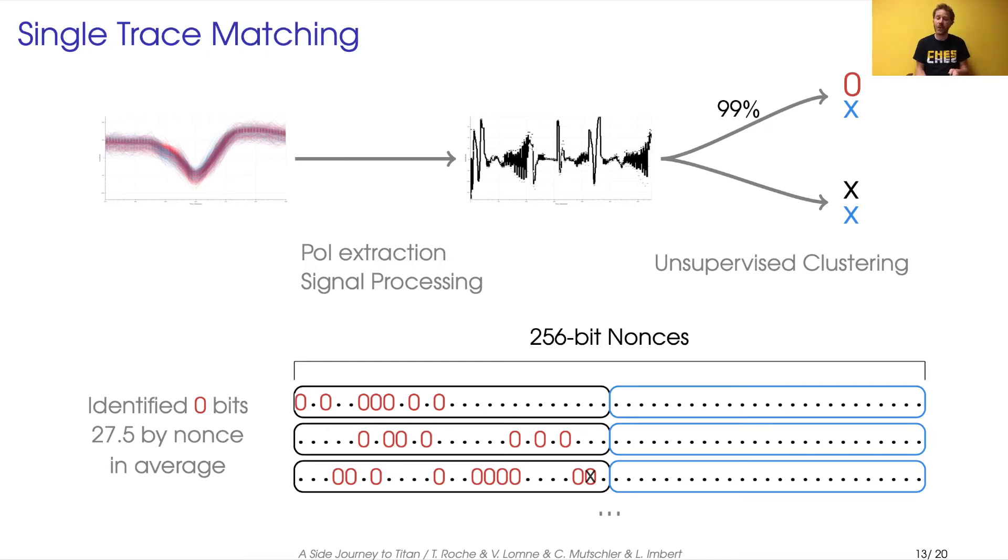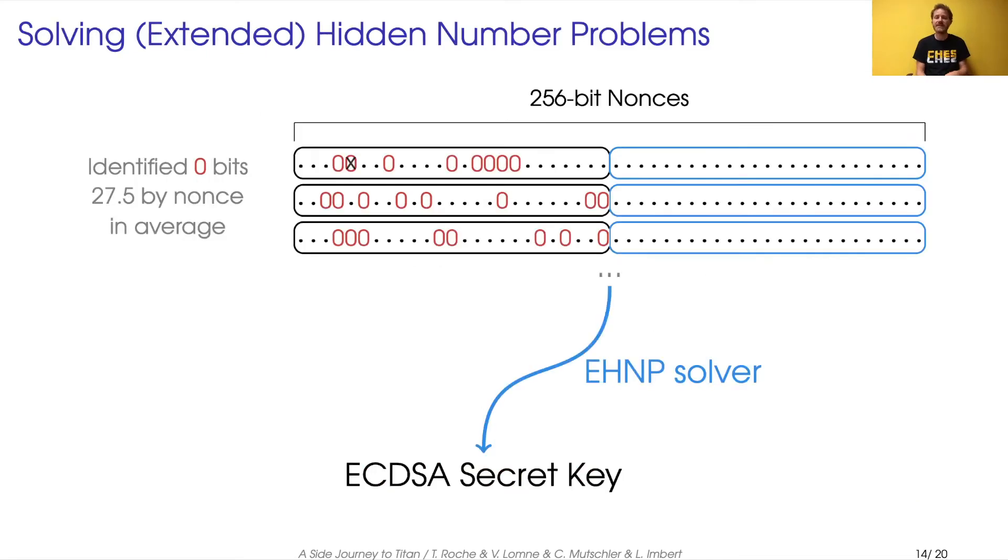So we end up with a list of nonces where inside the upper half of them is scattered a number of zero values that we identify. Some of them are wrong, but most of them are correct.